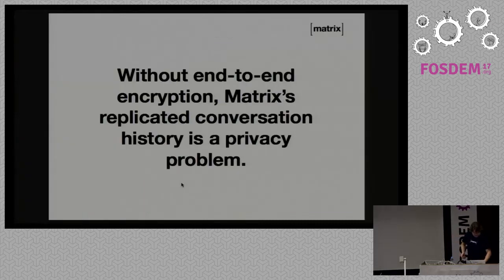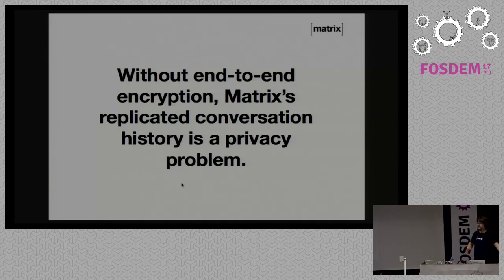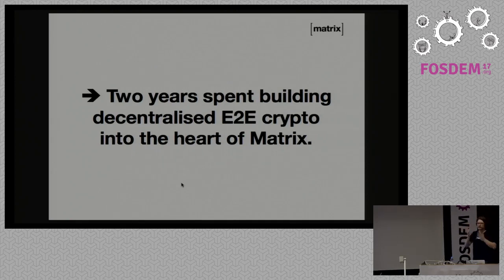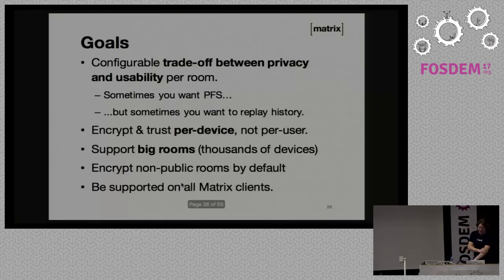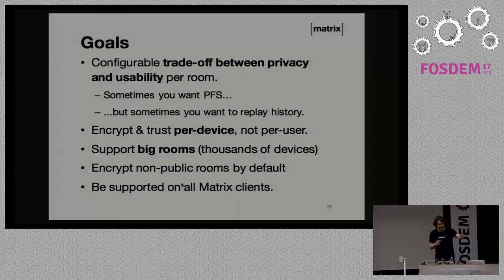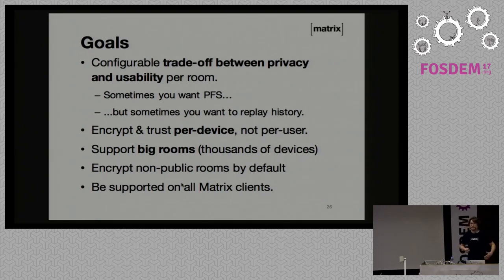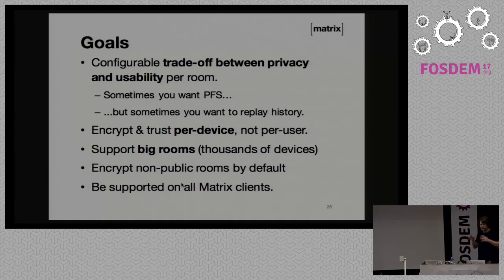Without end-to-end encryption, Matrix's replicated conversation history is a huge privacy problem — in a room like Matrix HQ, the plaintext would be over 500 different servers. So we spent two years gradually working away, putting end-to-end crypto into the absolute heart of Matrix. The goals were to trade off privacy and usability. Sometimes you do want perfect forward secrecy, and sometimes you really want to be able to add new devices and replay history. We think we're basically unique in wanting both — everybody else, whether it's Wire or Signal, goes for the hardcore secrecy approach.